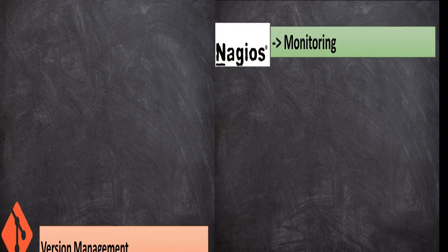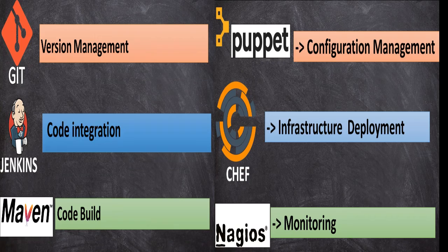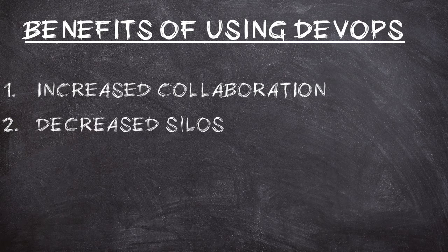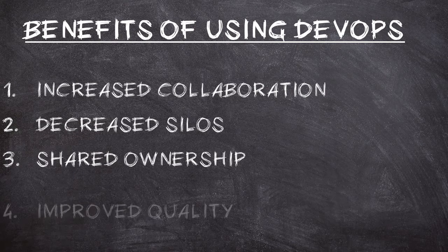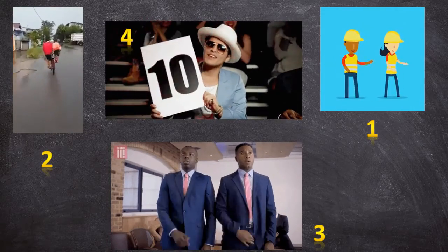All these tools help in this continuous integration, delivery, deployment and feedback under DevOps model. A DevOps team ensures that there is increased collaboration, decrease in team silos, shared ownership and overall improved quality of the product.